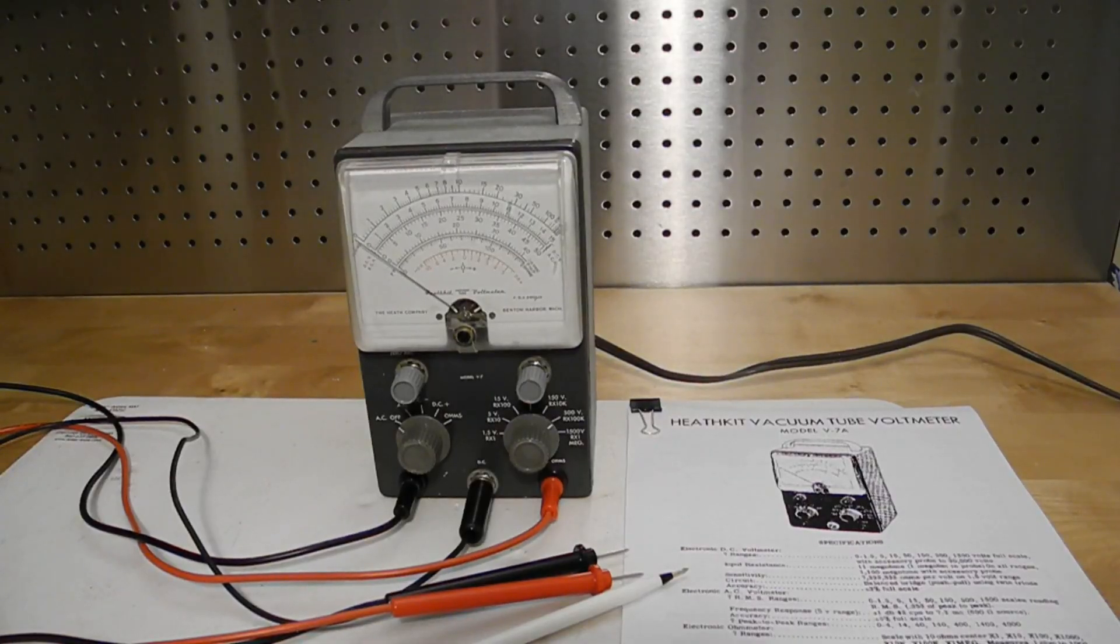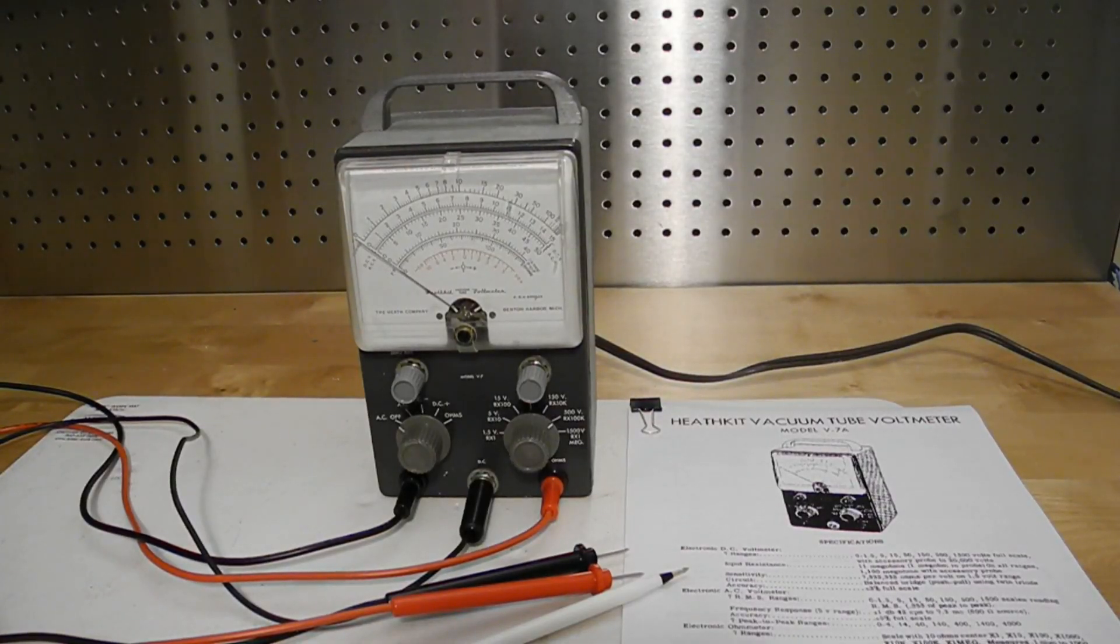In summary, this bonus meter that I acquired for nothing is now functional. While it can't compare to a modern digital multimeter for accuracy, it looks nice on the bench and is fun to use occasionally for working on vintage equipment. It's also of historic interest, as it was the first Heathkit to feature a printed circuit board.